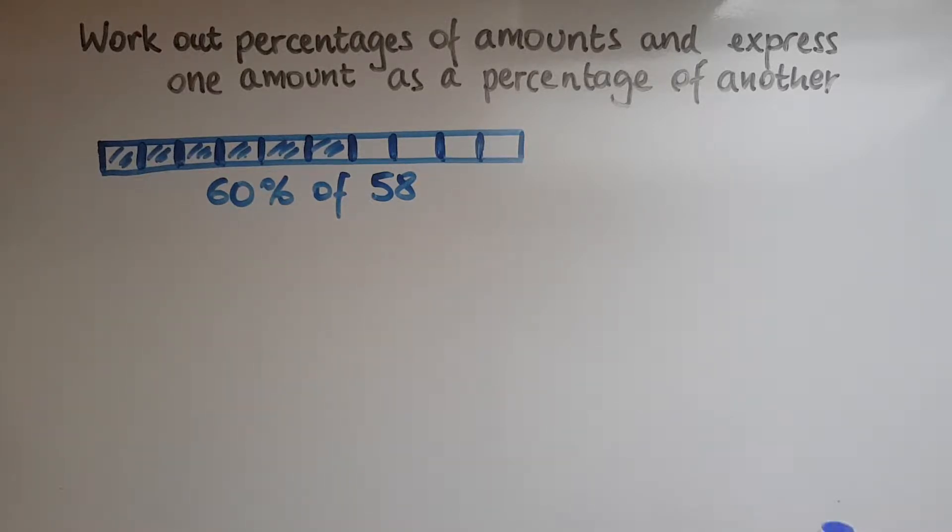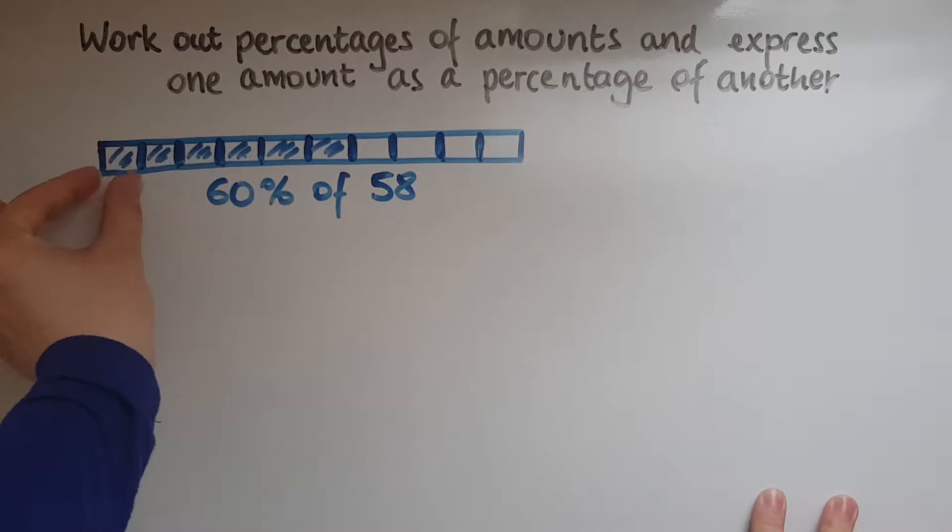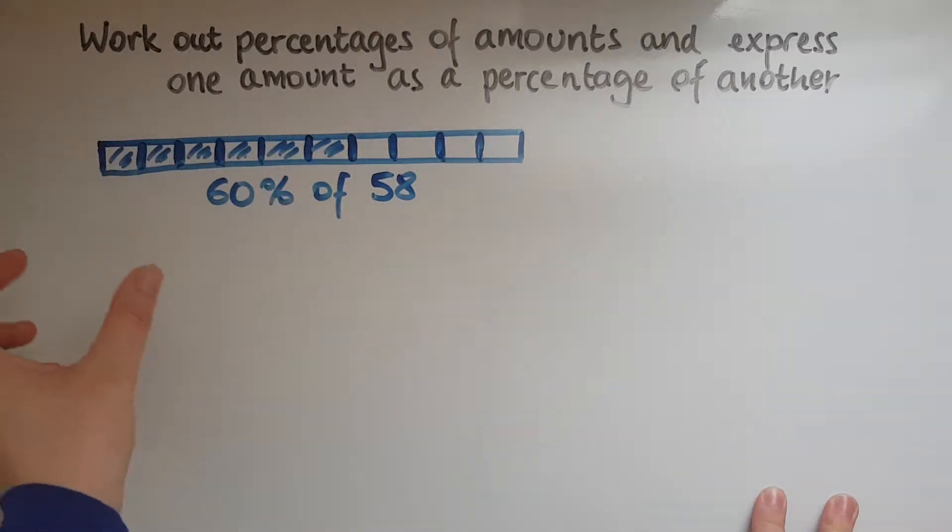So one way to work this out would be to divide 58 by 10, so we get 10%, and then multiply it by 6, so we get in total 60%. So that's one way.